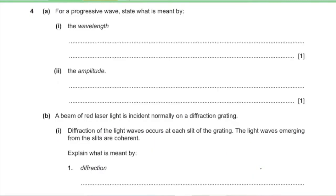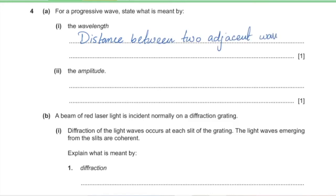Question 4, part A: for a progressive wave, state what is meant by: (1) wavelength — the distance between two adjacent wavefronts. These definitions need to be learned by heart. (2) Amplitude — the maximum displacement. This can be visualised using a displacement versus distance graph.